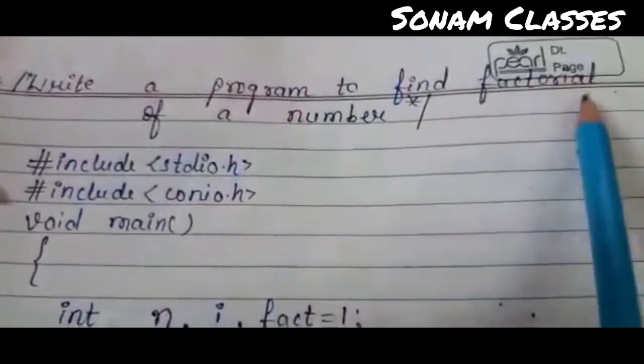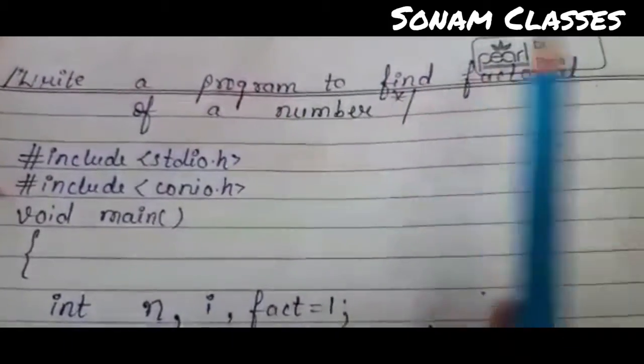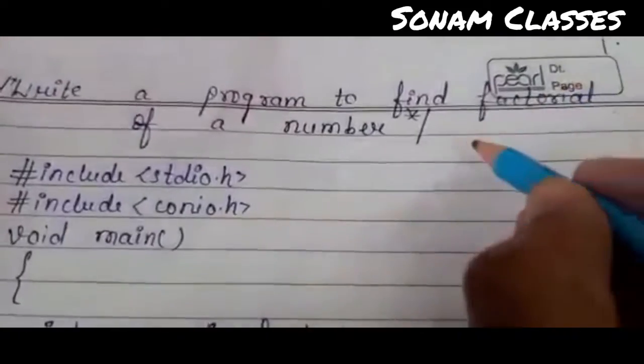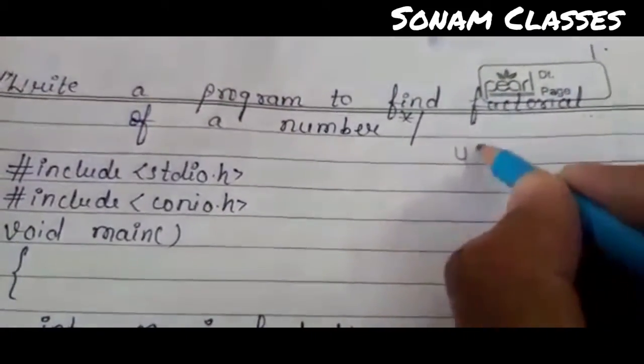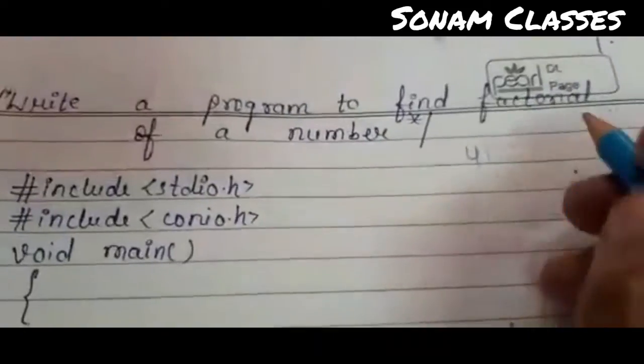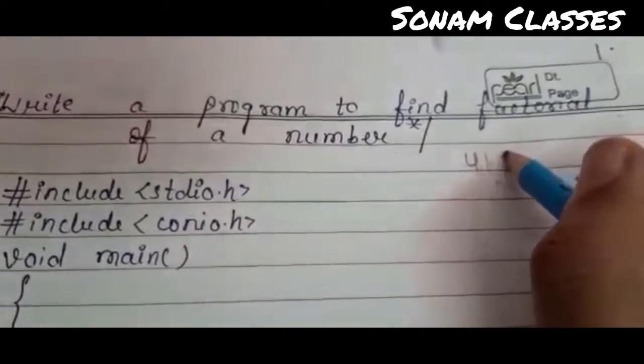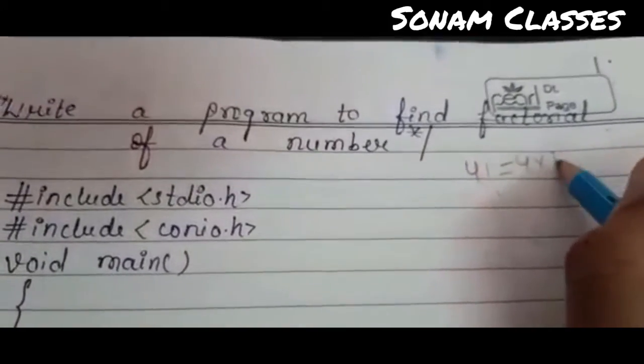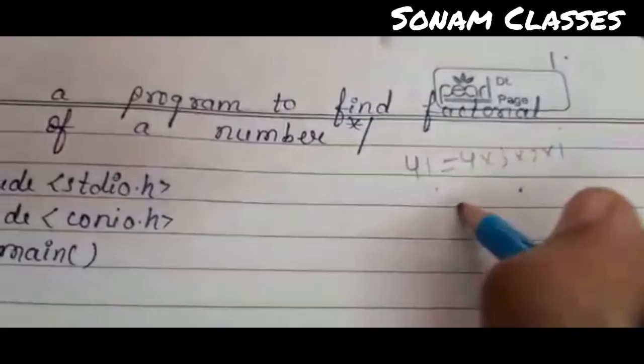Write a program to find the factorial of a number. Like you say, someone says that 4 factorial. So you know how to get 4 factorial? 4 into 3 into 2 into 1.